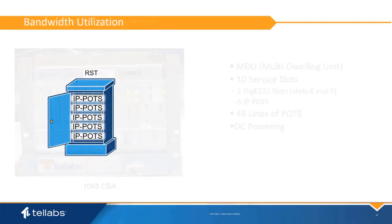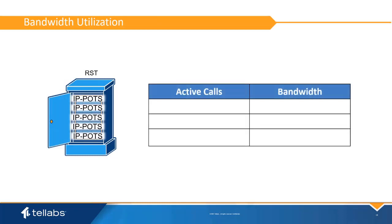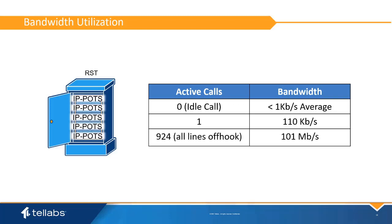The bandwidth utilization of the IP POTS card is very low. For any line in the on-hook state, the IP POTS card consumes almost no bandwidth, just occasional SIP messages which do not consume any appreciable bandwidth. For active calls, a voice line consumes about 110 kilobits per second per active call.